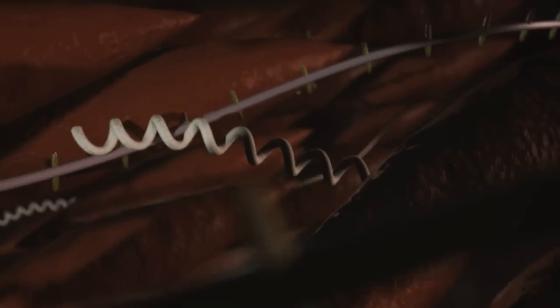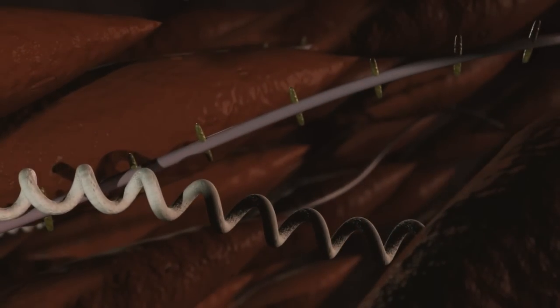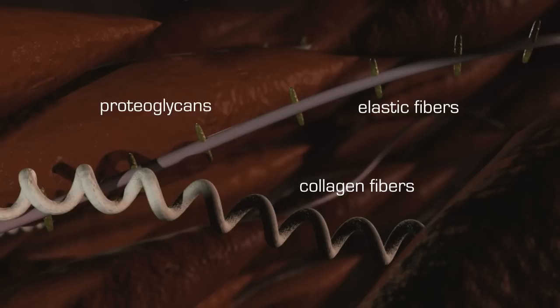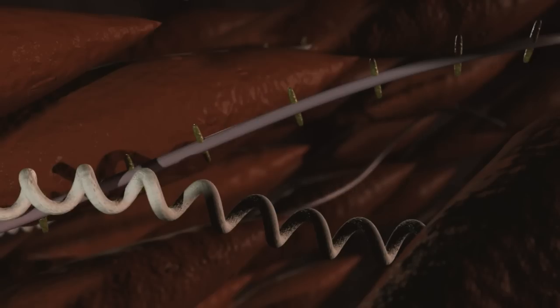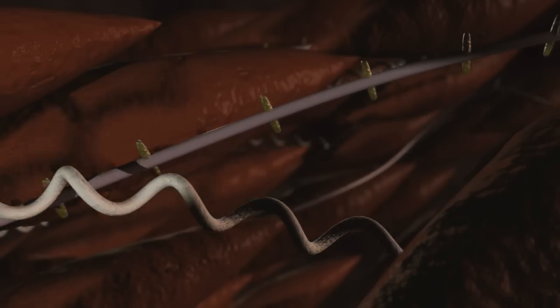The extracellular matrix between these cells contains collagen fibers, proteoglycans, and elastic fibers. These structures play a role in smooth muscle cell function as well as bladder expansion and contraction.